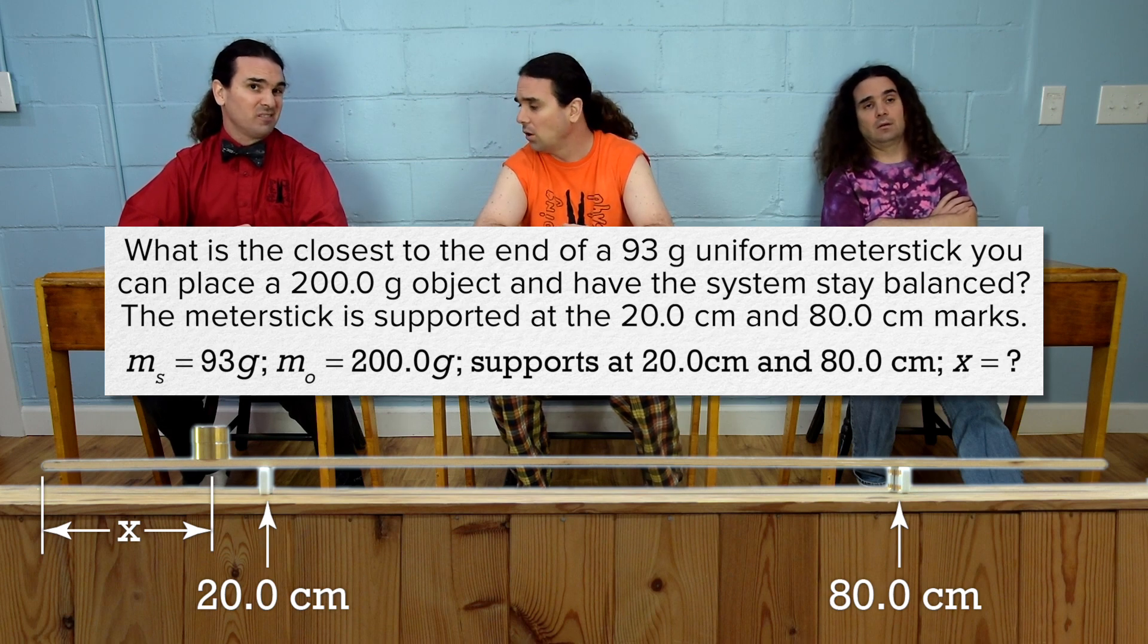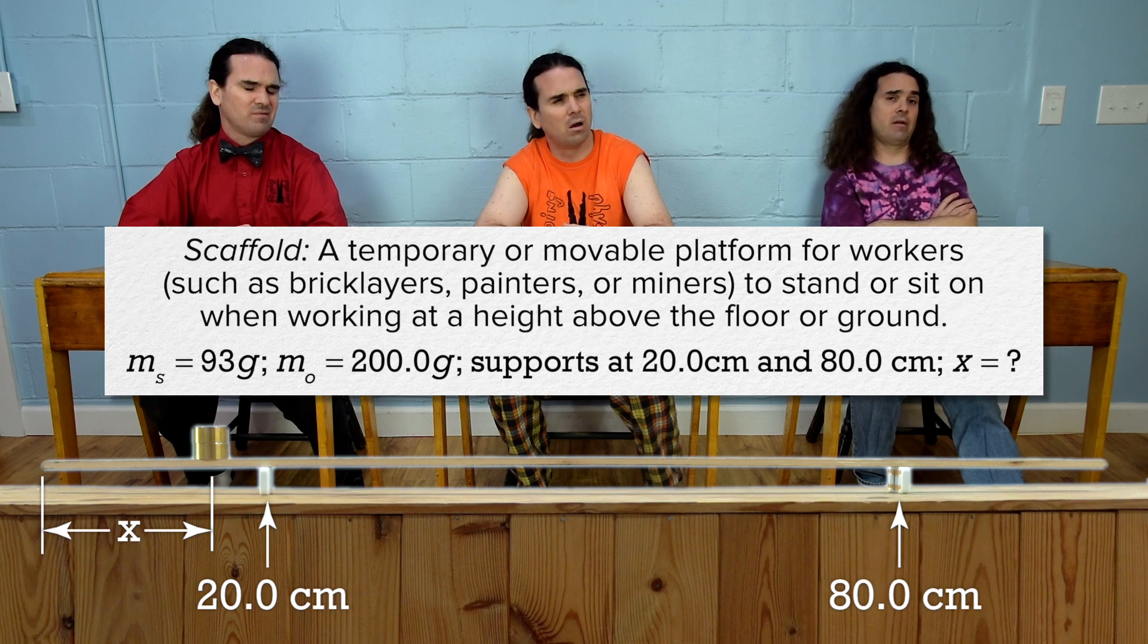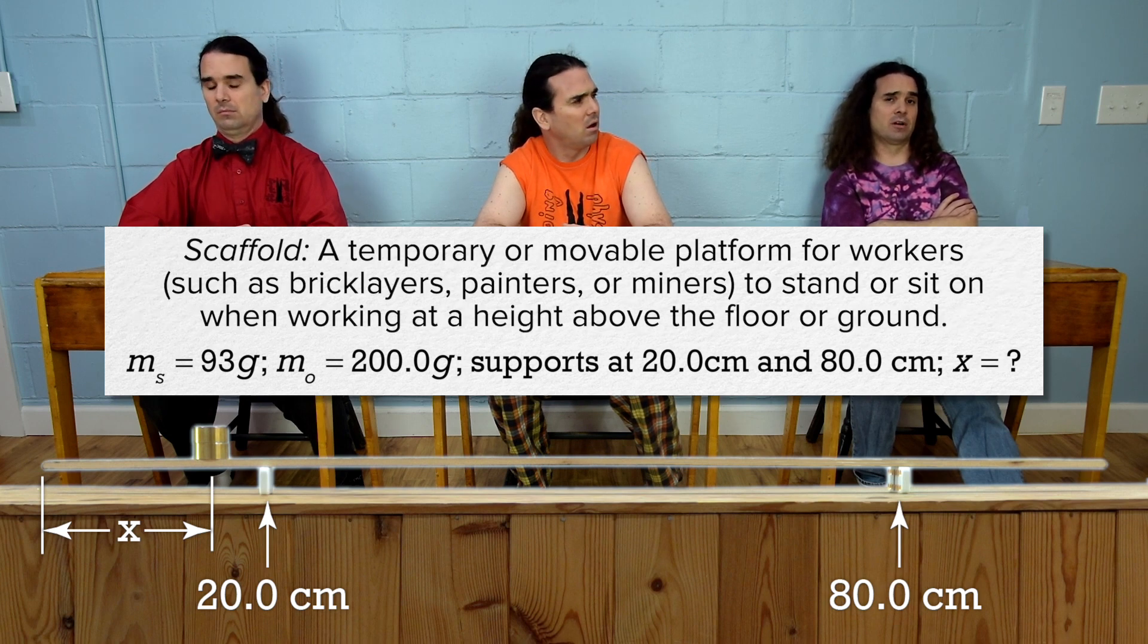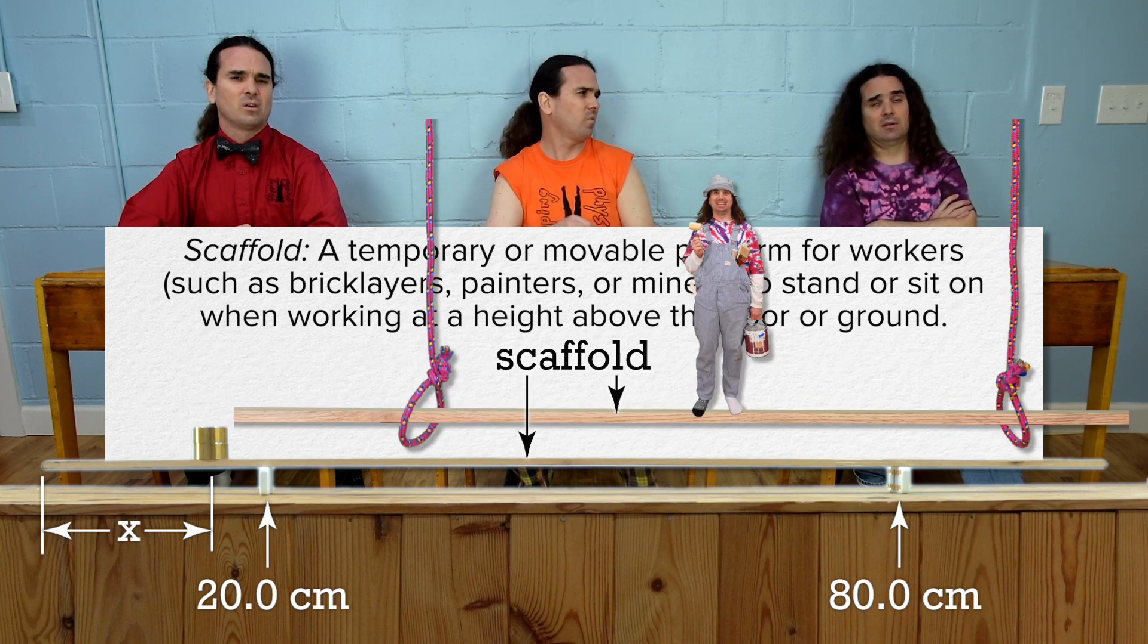What is a scaffold? According to Merriam-Webster, a scaffold is a temporary or movable platform for workers such as bricklayers, painters, or miners to stand or sit on when working at a height above the floor or ground. So, it's the wooden platform in Mr. P's illustrations.